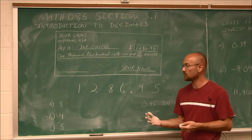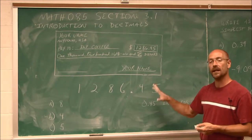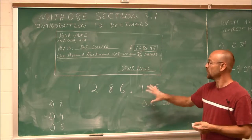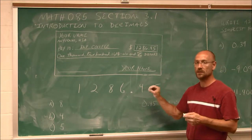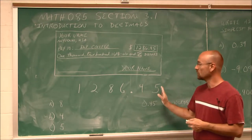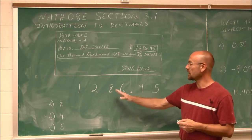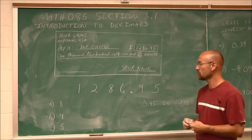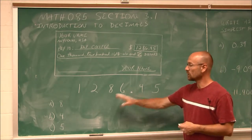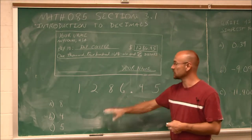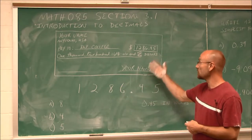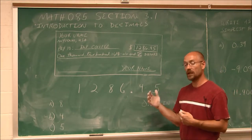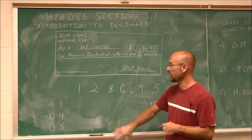It's something we talked about in the beginning of this video series, but we have to reassure that we know it. So we're going to identify these place values — they're very important when we work with decimals. The first example we're going to do is with this number from our check; we're going to identify what place values specific digits have.